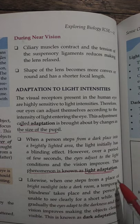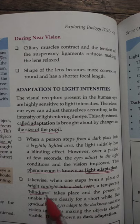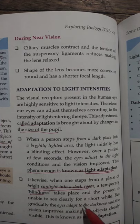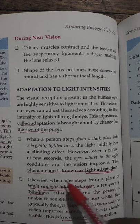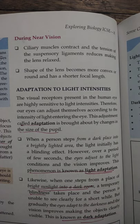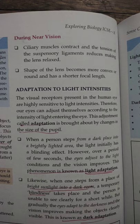Likewise, when one steps from bright sunlight into a dark room, there is temporary blindness and the person is unable to see for a short while. The eyes adapt to the darkness and the vision improves, making objects clearly visible. This is known as dark adaptation. For example, when you are taking a sun bath and then step inside the house, you will notice a period of blindness. The eyes take time to adapt to the darkness, and vision gradually improves making objects clearly visible. This is dark adaptation.